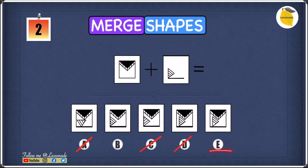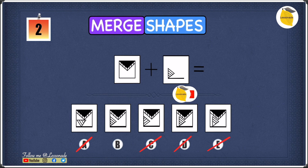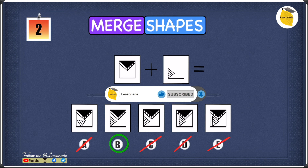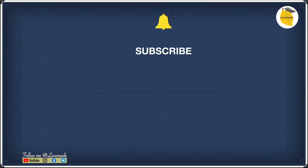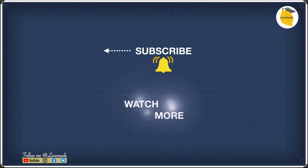In E you can straight away see that the triangle is pointing in the wrong direction, just like in D — both are in the same direction which does not match shape 2. So we can cross off E straight away. That means we're left with B, so our answer is B. For more practice questions on merge shapes, the link is in the description below and in the comments. To learn more nonverbal reasoning types click the video on the right, and to learn the previous type click the video on the left.